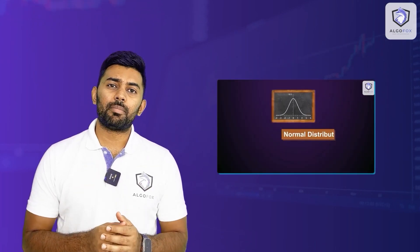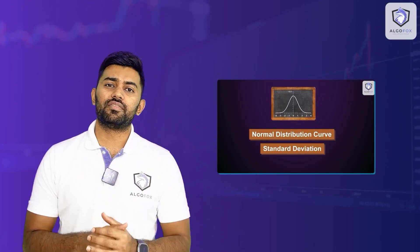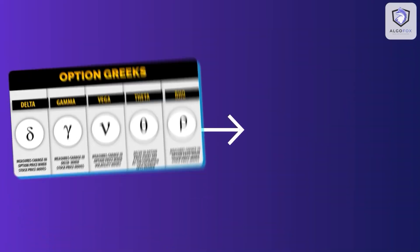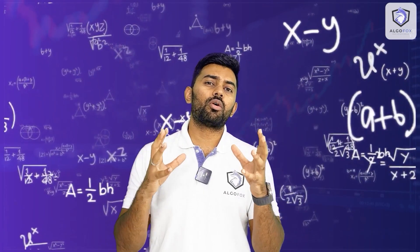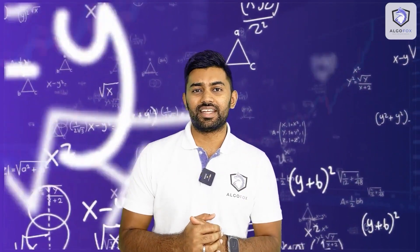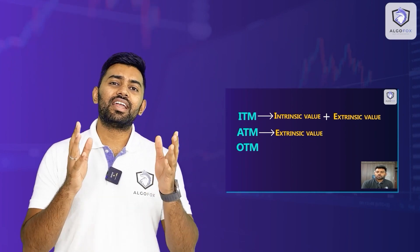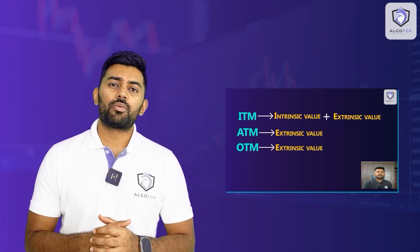Greetings all and welcome to AlgoFox Academy. In the last class we learnt in detail about normal distribution curve and standard deviation. Today I am going to teach you the impact of Greek factors on option premium. We are going to talk about the very basics of option Greeks and how emotions and volatility can affect stock prices. After today's chapter, in the next class we are going to talk about those complex formulas in detail. So let's dive into my screen and understand the factors determining option premium.